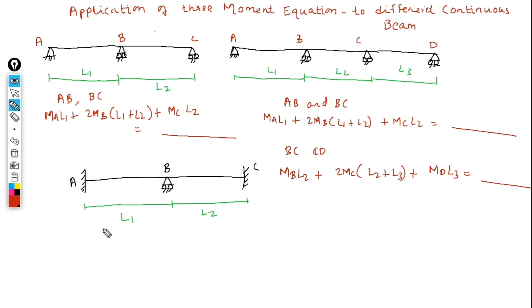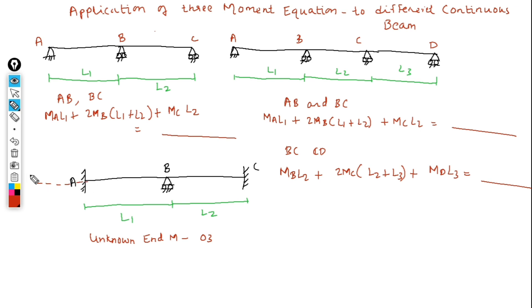Now in this case we also have two spans, but the unknown end moments are three in number. Ma, Mb, and Mc all exist, but we only have two spans, so applying the Three Moment Equation gives us only one equation — which is not enough. Whenever an end support is fixed, we are required to assume an imaginary span. Here, A is fixed and C is fixed, so whenever an end support is fixed, we take an imaginary span.